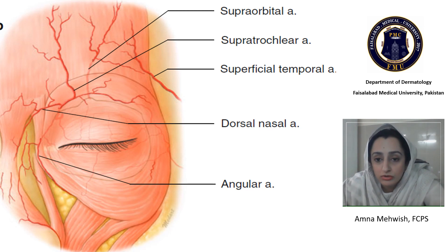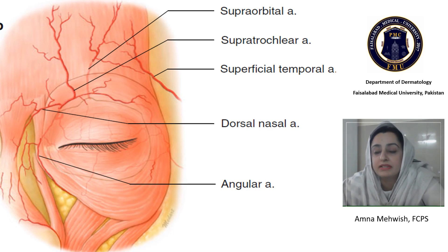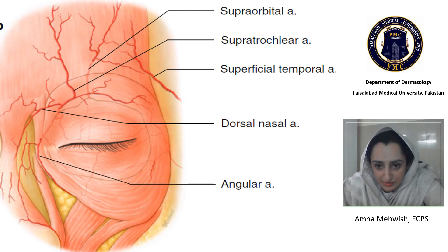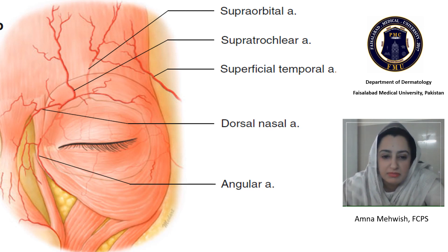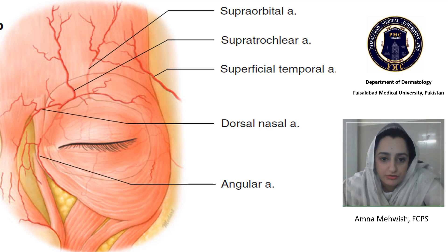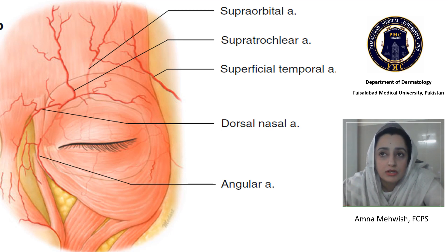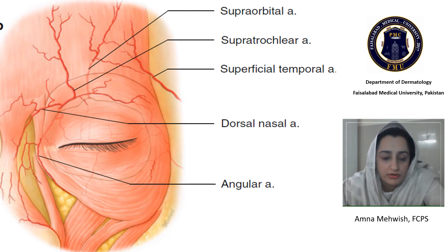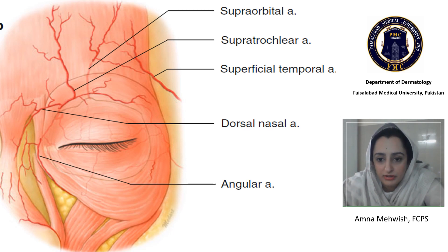In the upper face, there are many important structures. In the temple area, the superficial temporal artery and the anterior and posterior deep temporal arteries are present. On the medial side of the eye, the supraorbital and supratrochlear arteries are found. You must remember that the superciliary notch is at this area — you have to stay lateral to it, avoiding the medial area which contains branches of the internal carotid including the supraorbital and supratrochlear arteries.